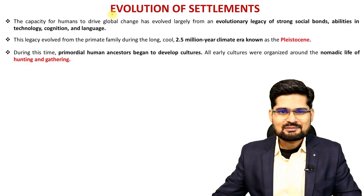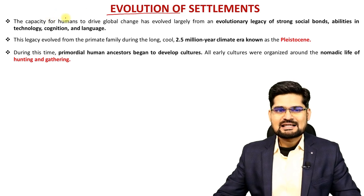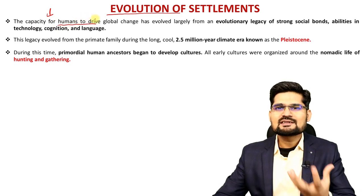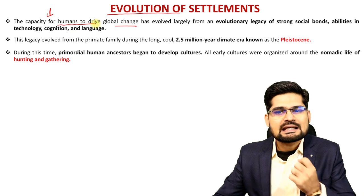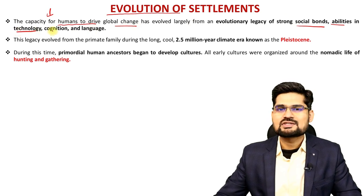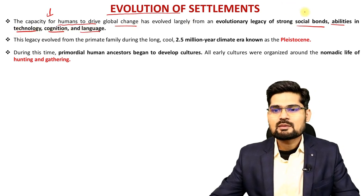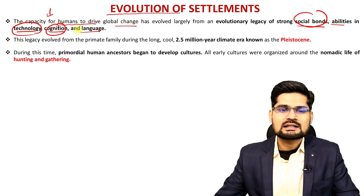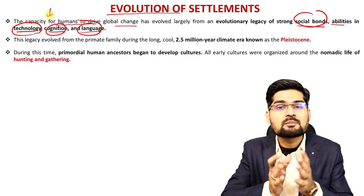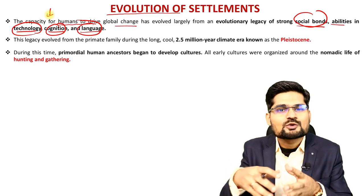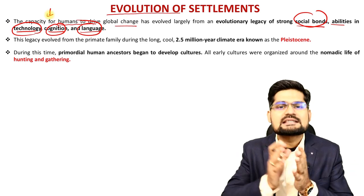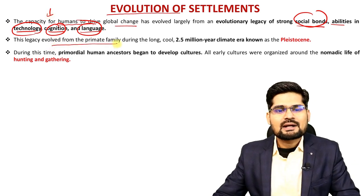The capacity for humans to drive global change has evolved largely on several evolutionary legacies. Those legacies are social bonds, abilities in technology, cognition, and language. These key words are very important to understand in terms of the proliferation of technologies and the creation of new settlements — how with technologies, growing social bonds, and new kinds of languages, evolution happened in accordance with these factors.